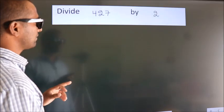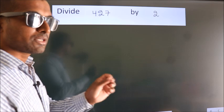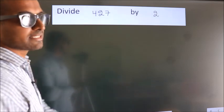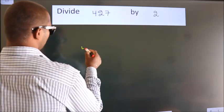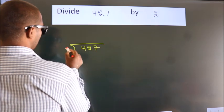Divide 427 by 2. To do this division, we should frame it in this way: 427 here, 2 here.